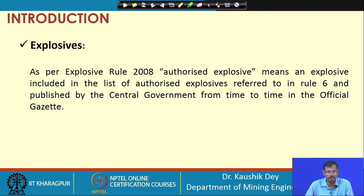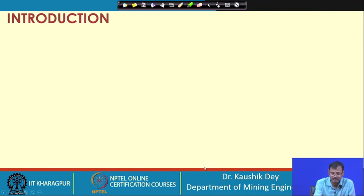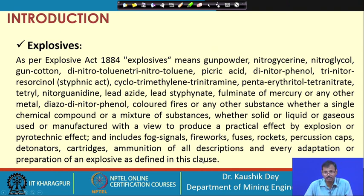First let us see what is explosive. As per Explosive Rule 2008, authorized explosive means an explosive included in the list of authorized explosives referred to in Rule 6 and published by the central government from time to time in the official gazette. This is the legal term of explosive - legally, a substance is called authorized explosive if it is listed in the government circular. This is a legal term, and any student may not draw any conclusion from this about which one will be listed and which one will not be listed.